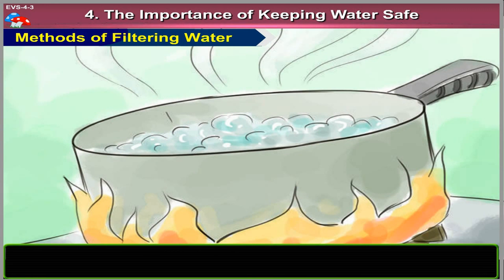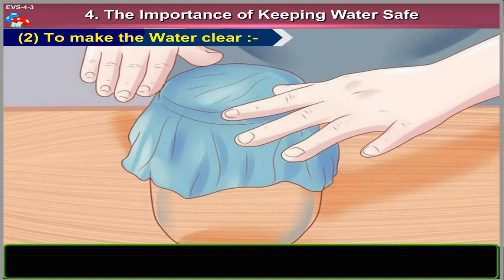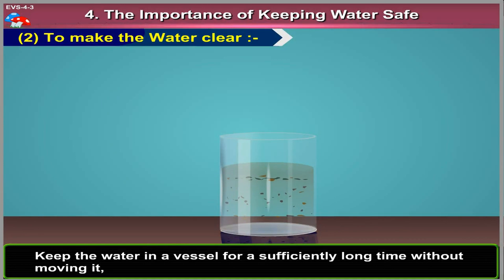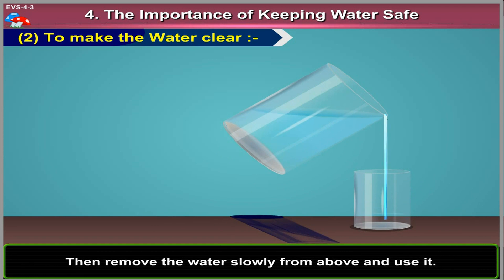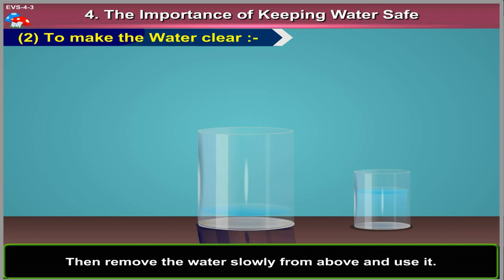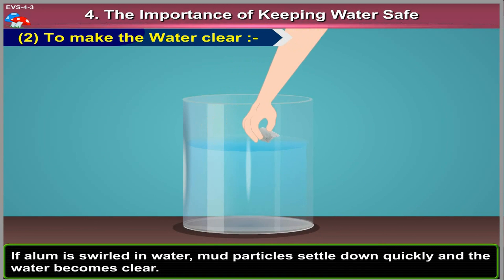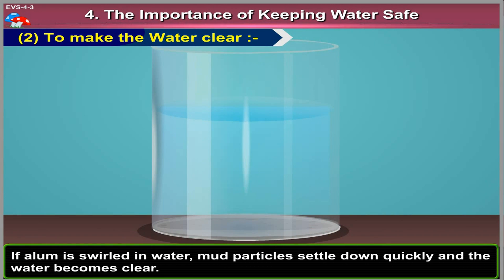Method 2: To Make the Water Clear. Keep the water in a vessel for a sufficiently long time without moving it, till all the mud particles and grains have settled at the base of the vessel. Then remove the water slowly from above and use it. If alum is swirled in water, mud particles settle down quickly and the water becomes clear.